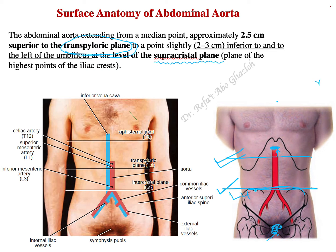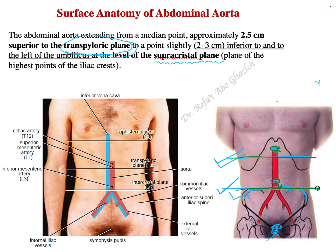We prefer to use bony landmarks rather than movable tissue like the umbilicus. However, some use the umbilicus as a reference: the abdominal aorta also begins two to three centimeters above the transpyloric plane and terminates two to three centimeters below the umbilicus — which again corresponds to the supracristal plane.